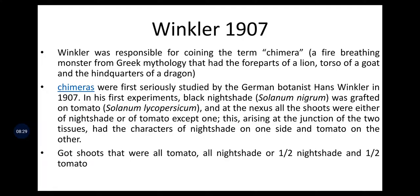The next scientist is Winkler in 1907. He could not give a proper definition to the word Chimera before, but the original work was done by Winkler in 1907. He coined the term Chimera, which is a fire-breathing monster from Greek mythology that has the head of a lion, torso of a goat, and hindquarters of a dragon — combining three parts from different organisms.